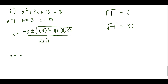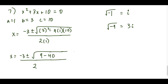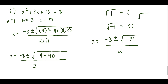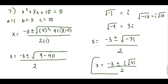Since we have a negative under the radical, 9 - 40 = -31, we know we'll get imaginary roots. The minus comes out as i, and the non-perfect square stays under the radical. So our two solutions are x = (-3 ± i√31) / 2, which are imaginary solutions.